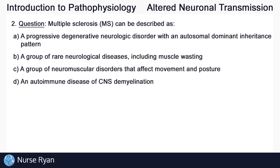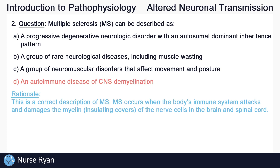Moving on to question number two: multiple sclerosis or MS can be described as D — it's an autoimmune disease of CNS or central nervous system demyelination. This is the correct description of MS. MS occurs when the body's immune system attacks and damages the myelin, or the insulated covers of the nerve cells, in the brain and spinal cord.